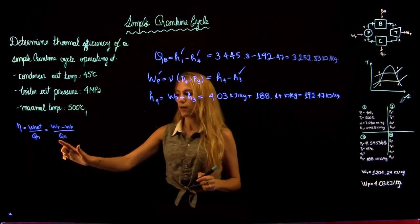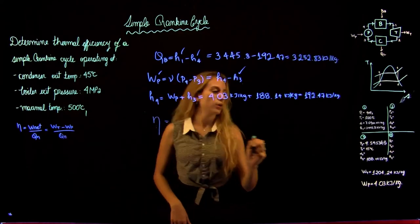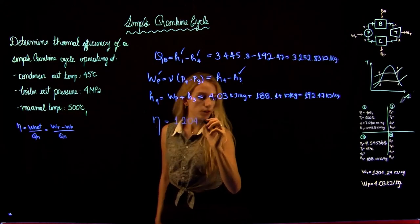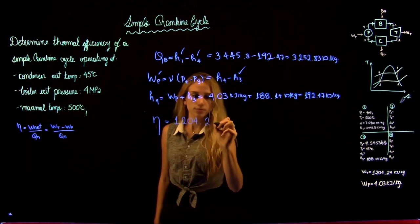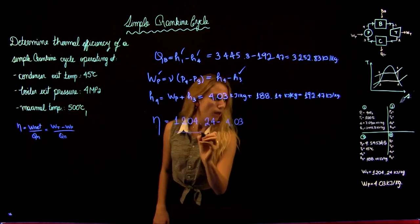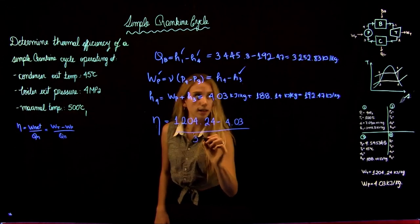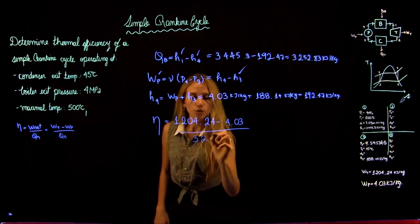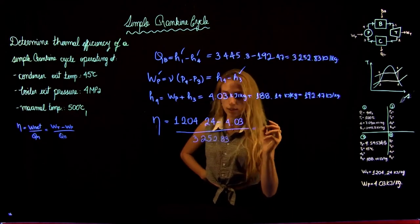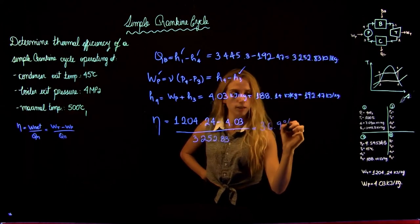Now that we have the heat input, we can plug in our values to find the thermal efficiency. The turbine work is 1,204.24 minus the pump work of 4.03, over the boiler heat input of 3,252.83. This gives us a thermal efficiency of 36.9%.